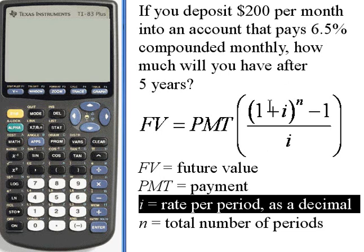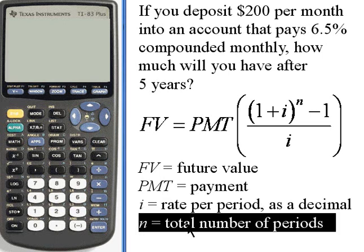Then we're going to take that and raise it to the n power. n is the total number of periods we'll have. So it's going to be the number of years, 5 years, times the number of periods per year, which is 12, so n will be 5 times 12, or 60.